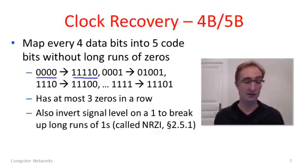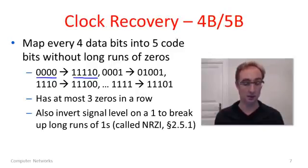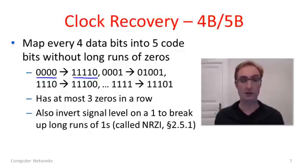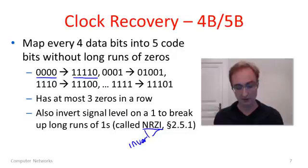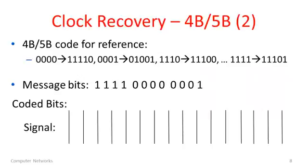Of course, if you've been thinking ahead, you realize that you can have fairly long runs of ones — we haven't done anything to prevent long runs of ones. So to prevent that being a problem, we can use a kind of coding where we invert the signal level on a one and keep it at the same voltage level for a zero. This form of coding is called NRZI, where the I stands for invert. And it's also shown in your text. Here in our example, I've reproduced the table of 4B5B for reference.